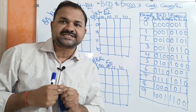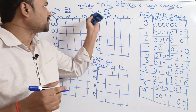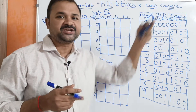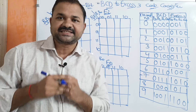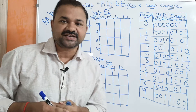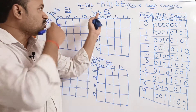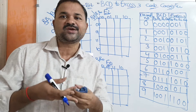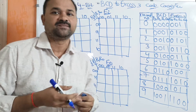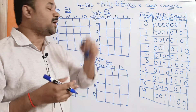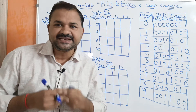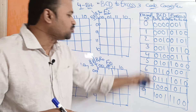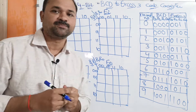Now let us discuss about 4-bit BCD to XS3 converter. BCD means binary coded decimal. We have 10 BCD digits from 0 to 9.